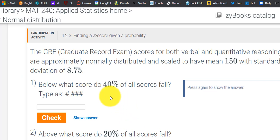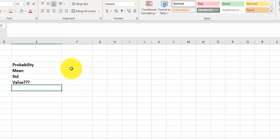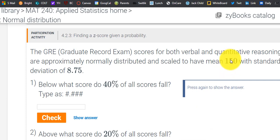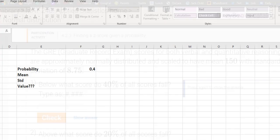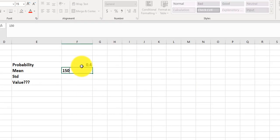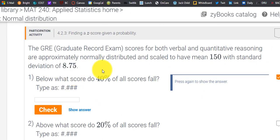Our probability would be the 40%, so we could write that as 0.4. That's my probability. The mean was given to us, that was 150. And the standard deviation, I believe, was also given to us. I think it was 8.75. Standard deviation, 8.75.